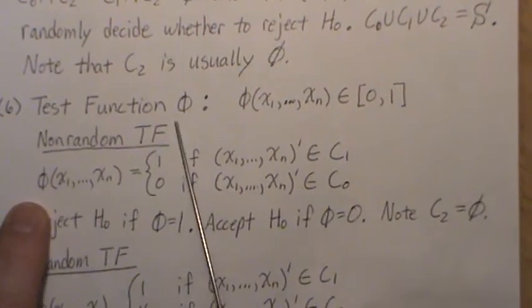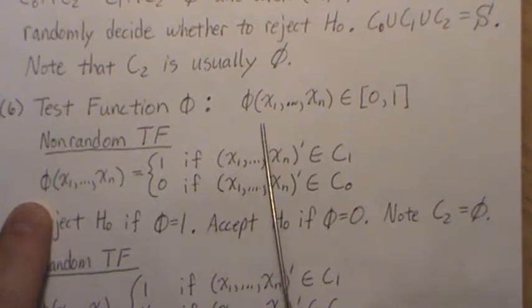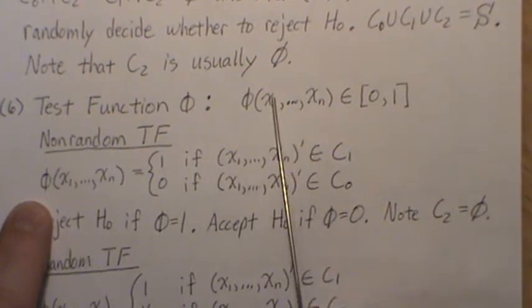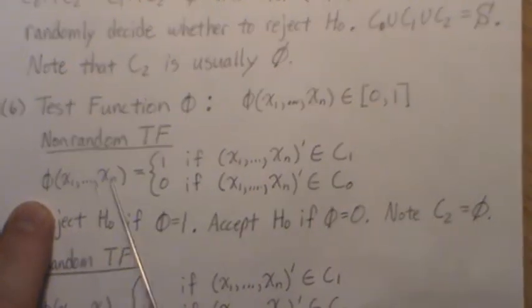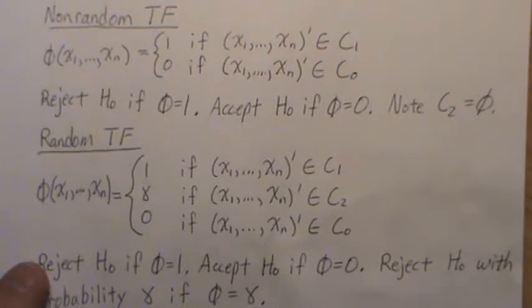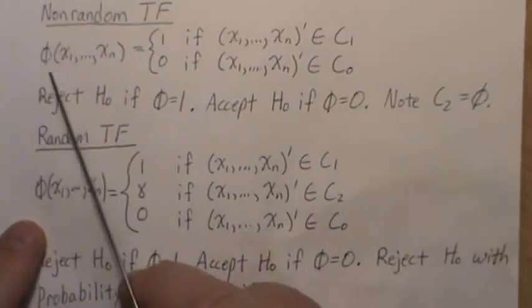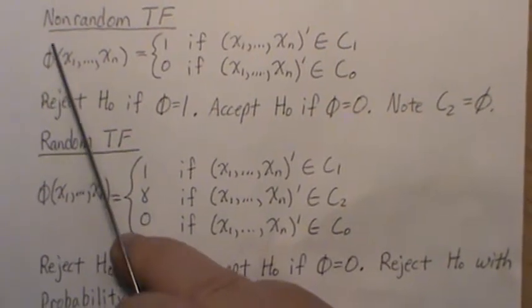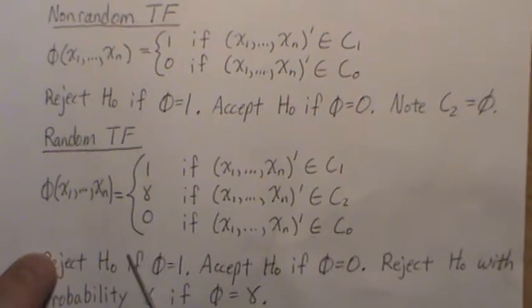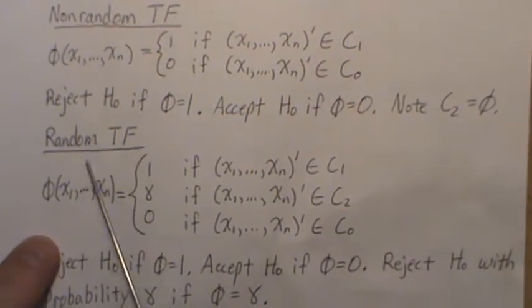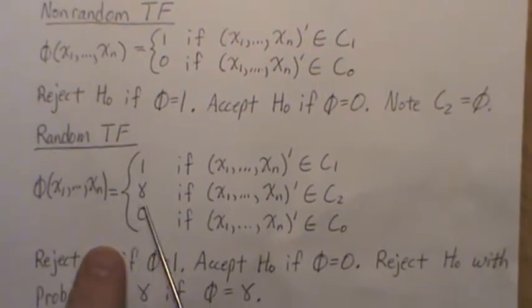Phi, often we just write it like phi, but I want to illustrate that phi is actually a function of the entire sample, of our data that we collected. Now for a random test function, in books I've seen delta, but I'm going to use phi.